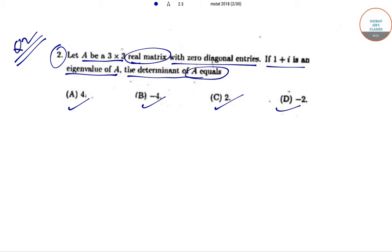We've been given that A is a 3×3 real matrix with diagonal entries equal to 0. Since 1+i is an eigenvalue of A, we need to find the determinant of A.